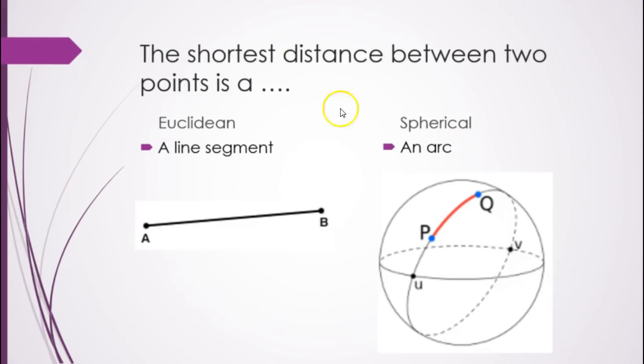And the shortest distance between two points in Euclidean is a straight line, and in spherical, it's an arc.